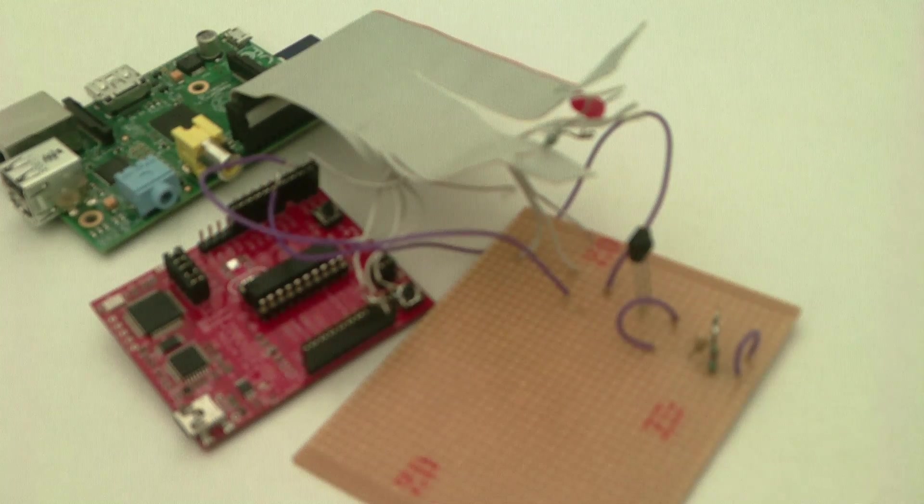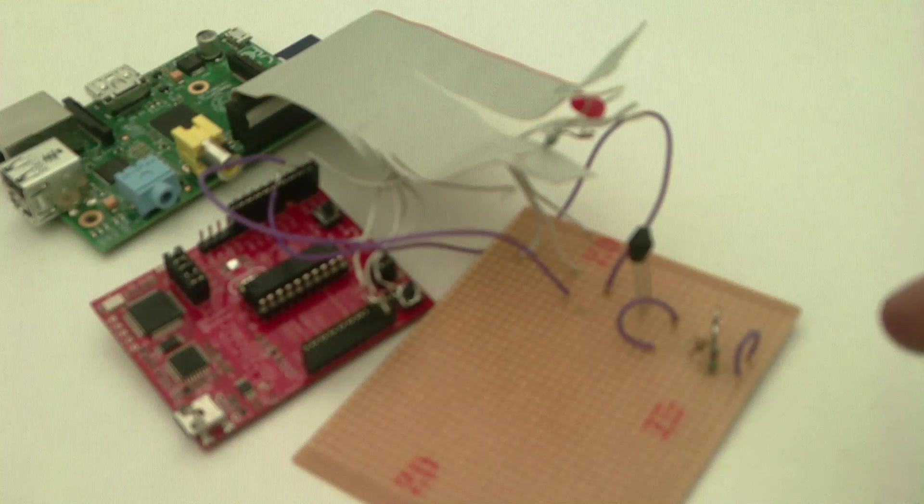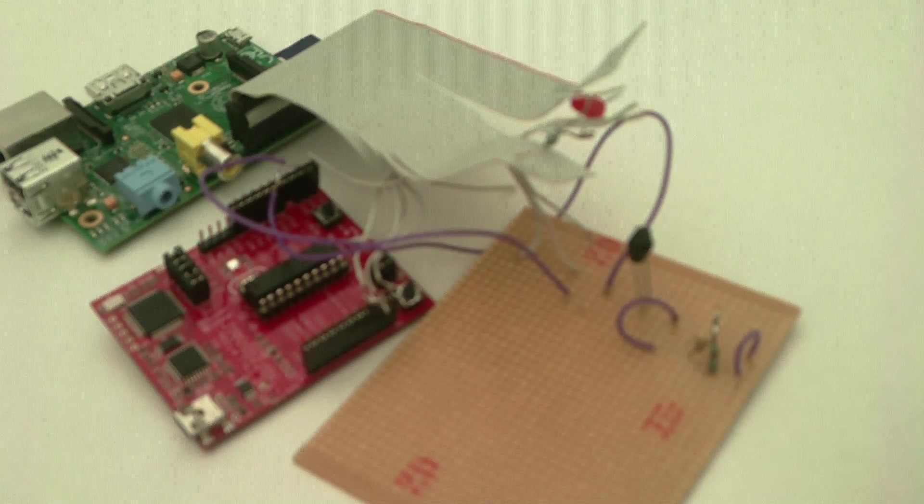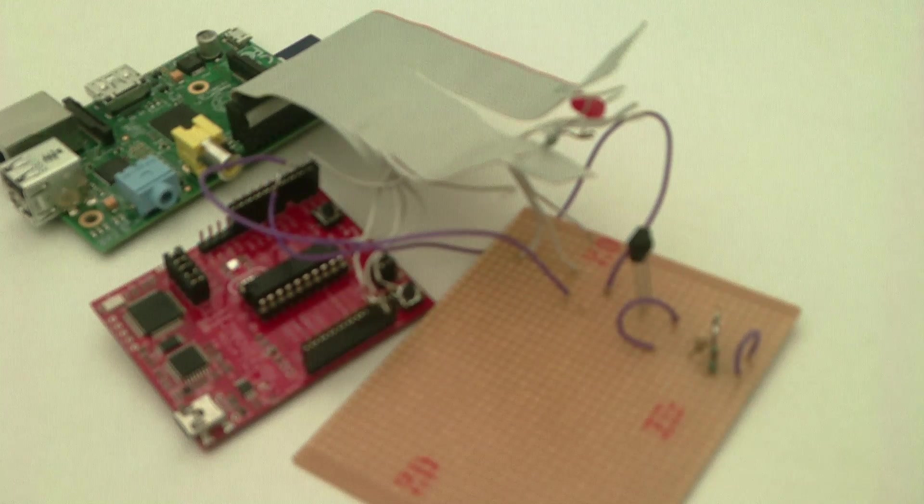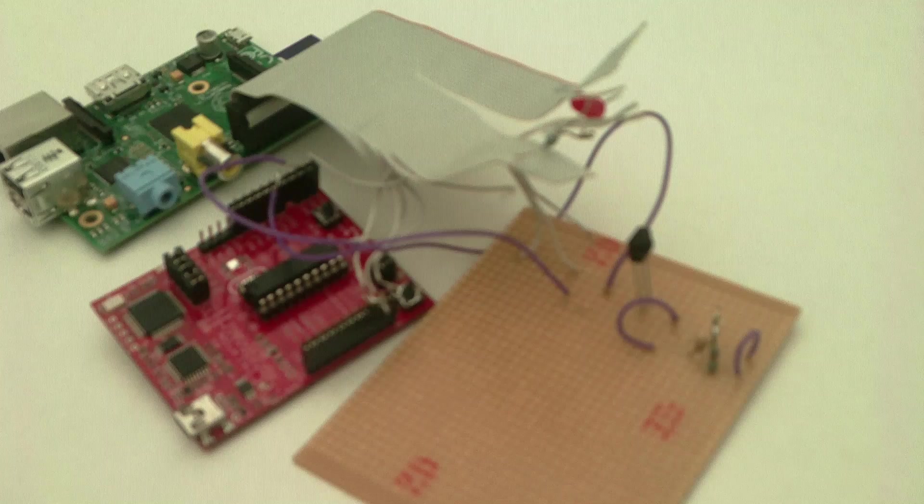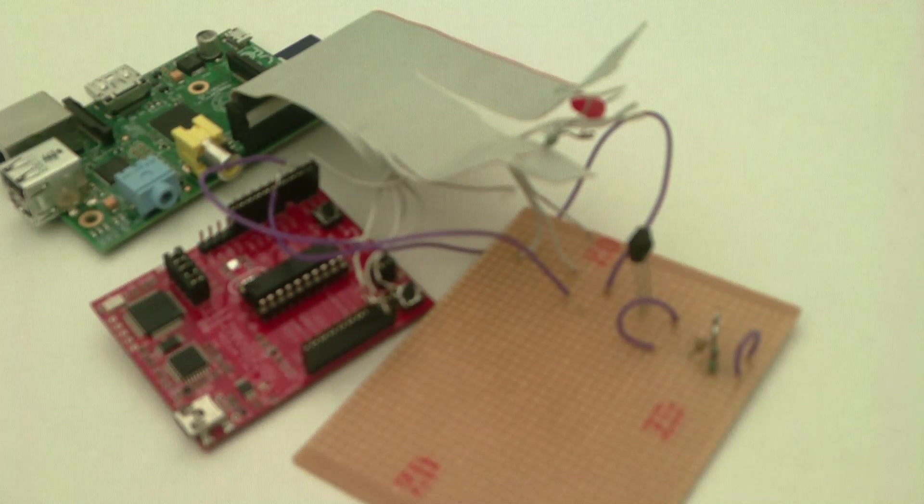What it does is it detects when you press a button on the remote control. It receives the infrared signal from the remote. The remote has a pulse which oscillates around 38k or 40k depending on the chip, but this one's set up for 38k.